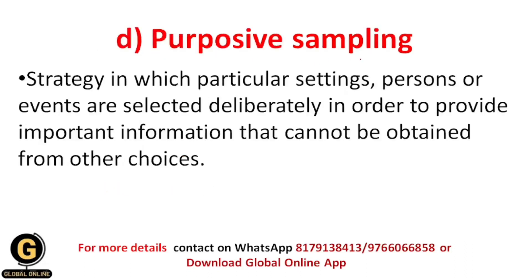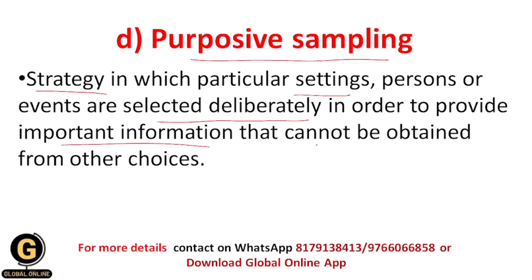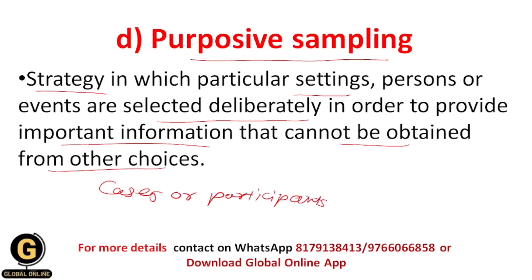The last type of non-probability sampling is purposive sampling. In this sampling technique, a researcher has a particular kind of purpose for selecting certain persons, settings, or things in their research. We use a strategy in which particular settings, persons, or events are selected deliberately in order to provide important information that cannot be obtained from other choices. The researcher includes cases or participants because they believe they warrant inclusion and have a particular purpose for taking them as a sample.